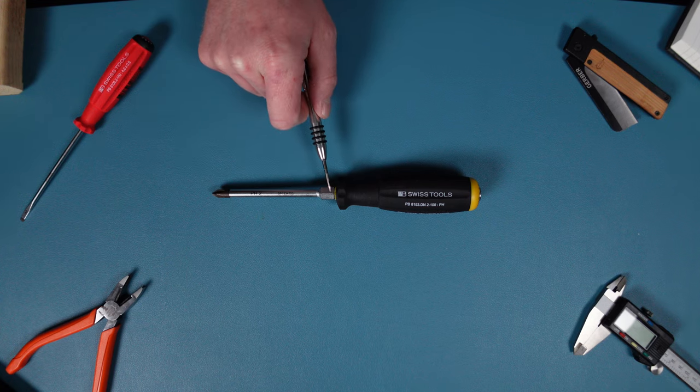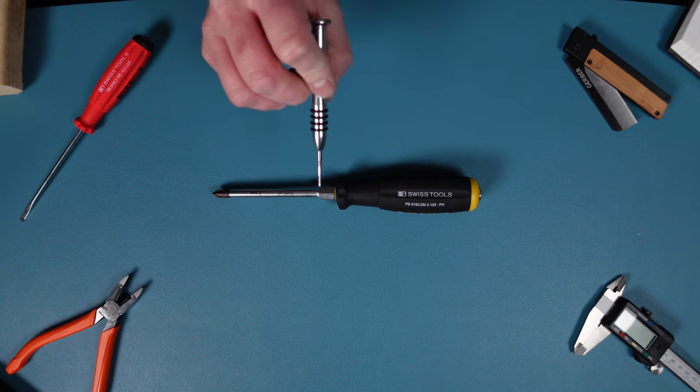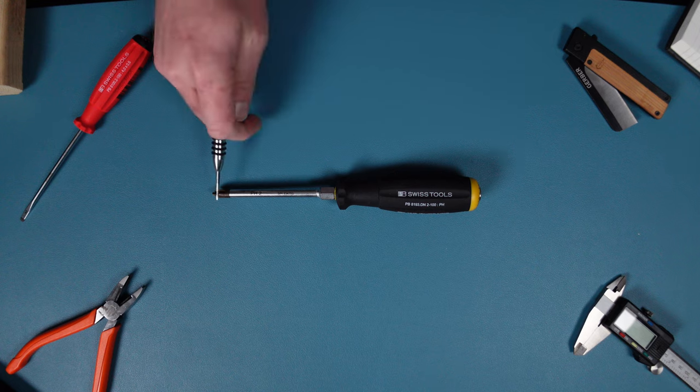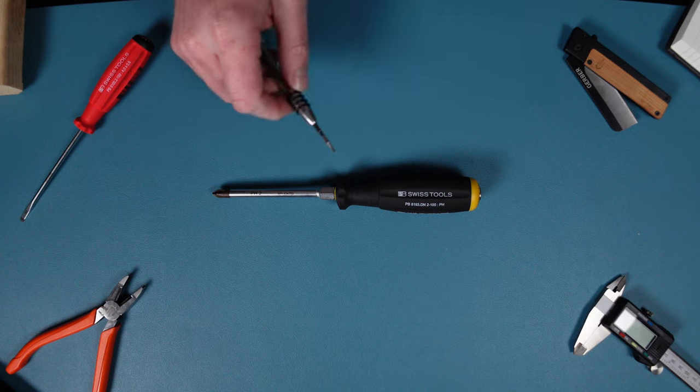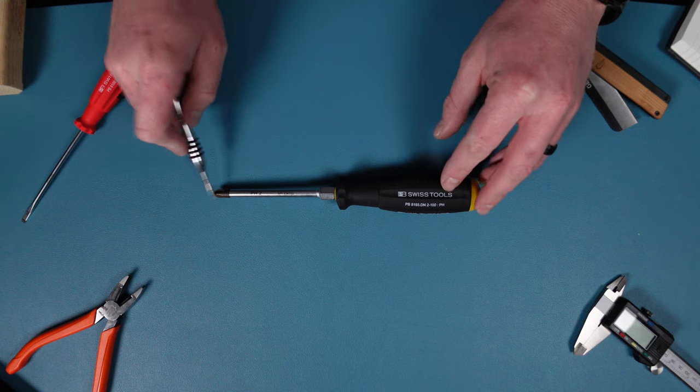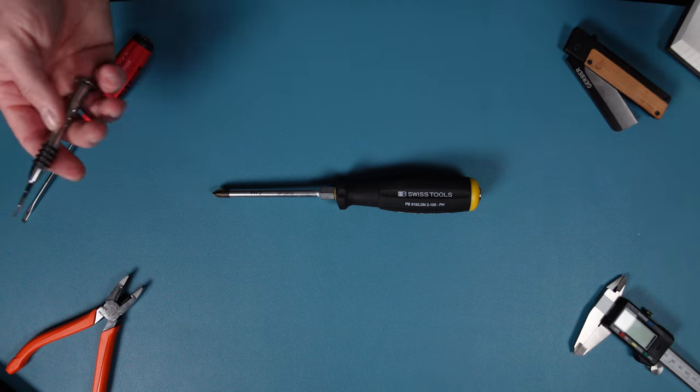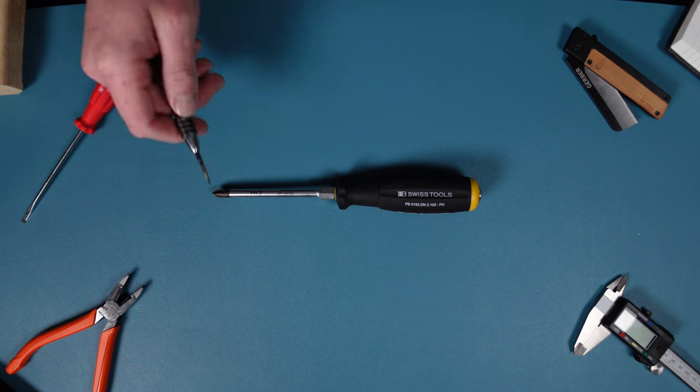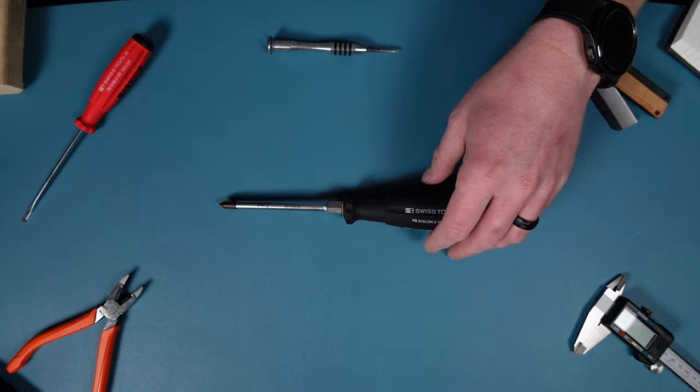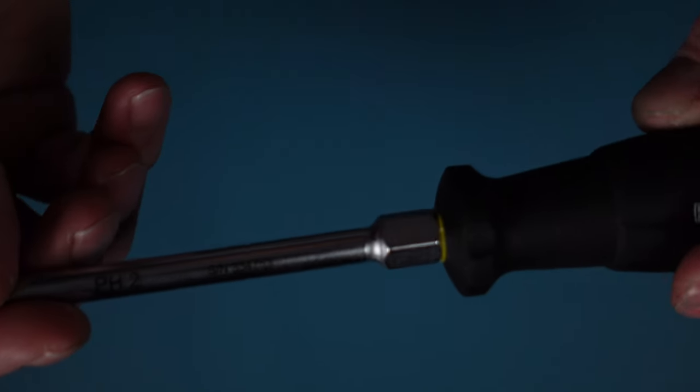As far as dimensions it is a four inch blade from tip to the bottom of the hex bolster. The handle is going to be approximately four and three eighths inches long so the total length is going to be eight and three eighths inches long. It is a non magnetic tip but that doesn't really matter you can always magnetize the tip if you would like or demagnetize it.